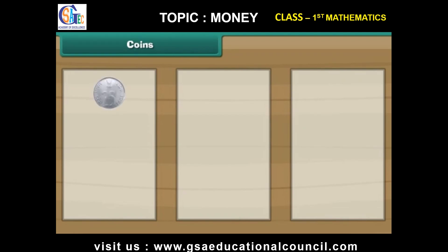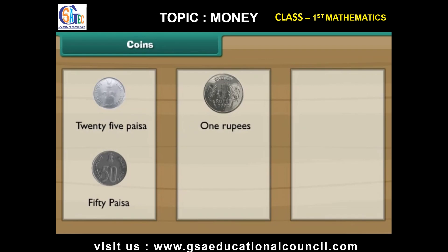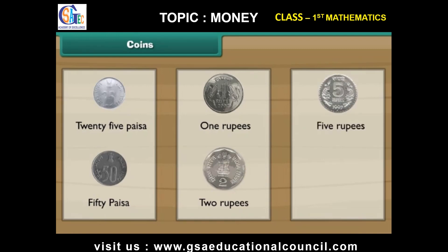Look at this small coin. It is a 25 paisa coin. This is a 50 paisa coin. This is a 1 rupee coin. This is a 2 rupee coin. This is a 5 rupee coin. This is a 10 rupee coin.